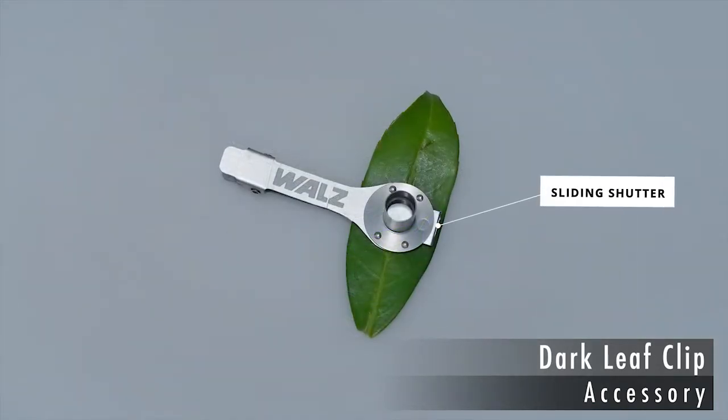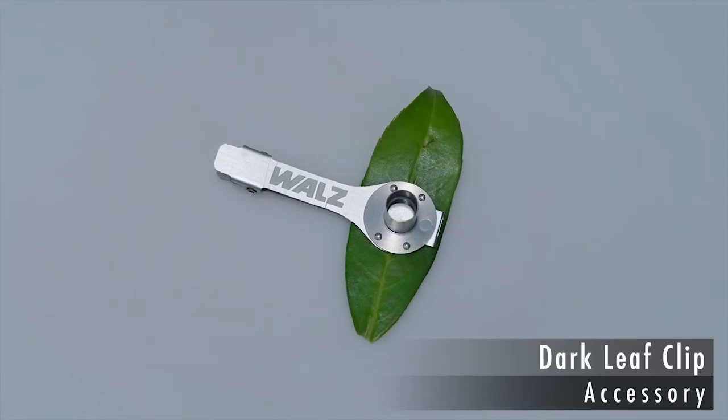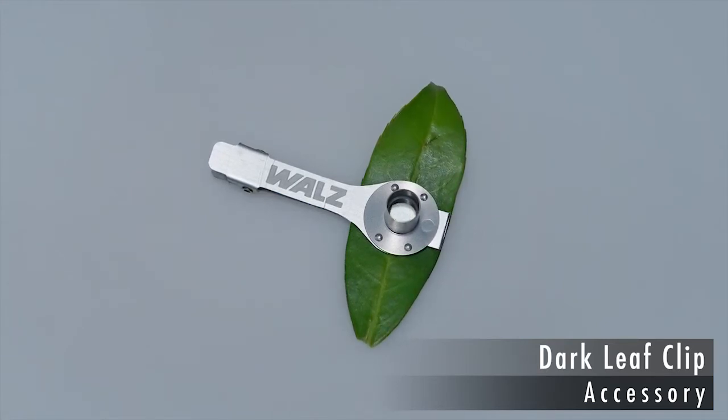With the shutter closed, the fiber optics is inserted into the cylindrical sleeve of the clip. The shutter is then opened in order to measure the FV over FM value.